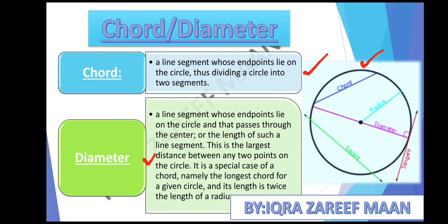Three things are important about the diameter: first, it is the largest distance between any two points of the circle; second, it is a special type of chord that passes through the center; and third, the diameter is double the radius. So if the radius is 5, the diameter is 10.